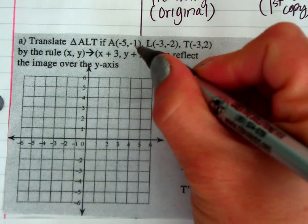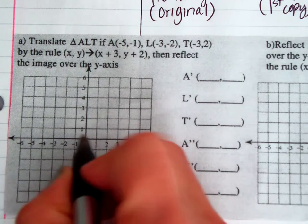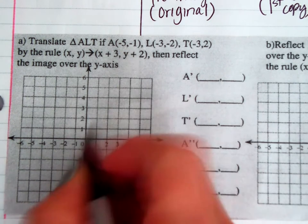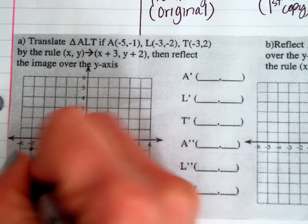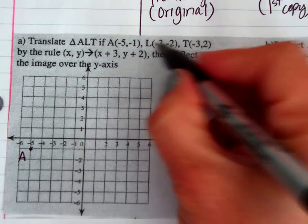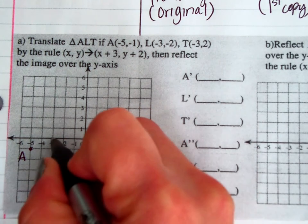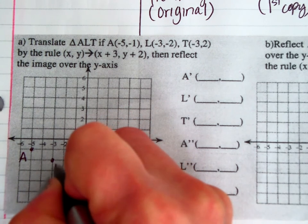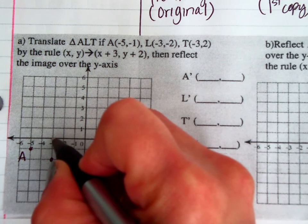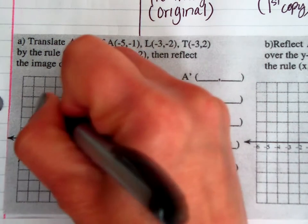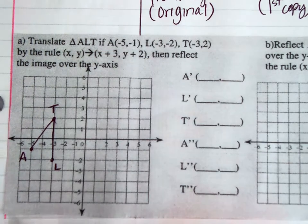For A at (−5, −1), remember to always start from the origin — first number left or right, second number up or down depending on its sign. So we're going left 5 and down 1. That's my A. For L at (−3, −2), we go left 3 and down 2 — here is L. For T at (−3, 2), we go left 3 and up 2. Make sure to label all of your points. So here's my first drawing.